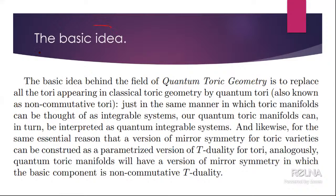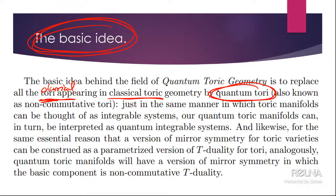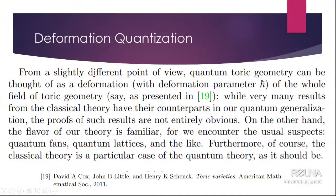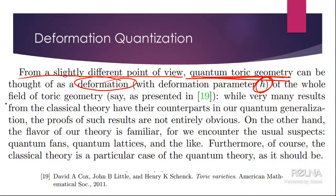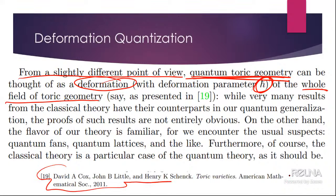The basic idea of quantum toric geometry is to replace all the tori in the classical theory by quantum tori. From a slightly different point of view, quantum toric geometry can be thought of as a deformation with the deformation parameter H-bar of the whole field of toric geometry. You can take the book of Cox, Little, and Schenck, take all those toric varieties, and deform the whole book by H-bar.